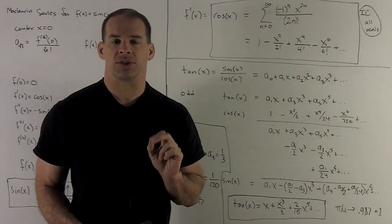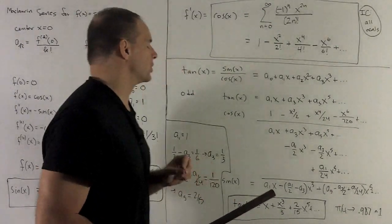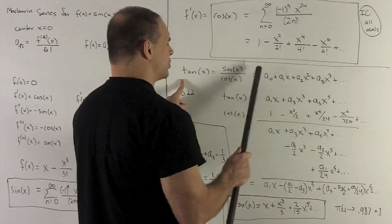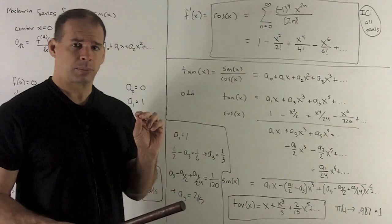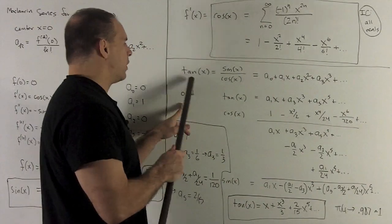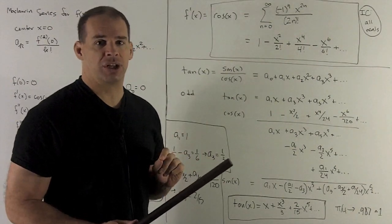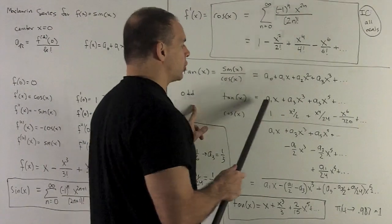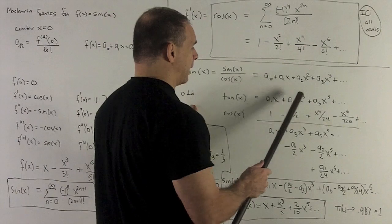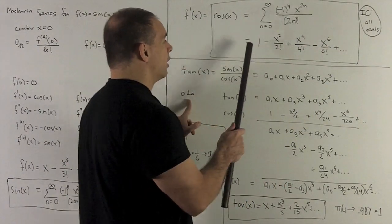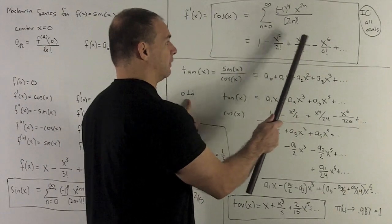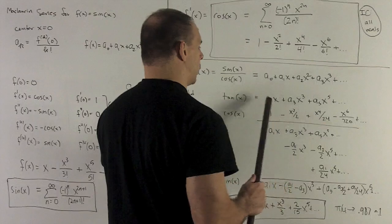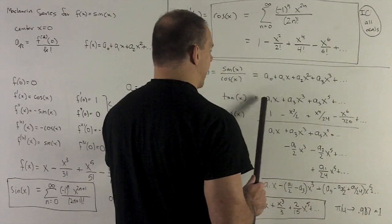Now we should see this trick at least once: how to divide one power series by another. Since we have sine and cosine, we might as well get tangent. Tangent is going to be an odd function, so the only terms that appear in its Maclaurin series are odd powers. Since we know the even coefficients are zero, we only need to find a1, a3, and a5.